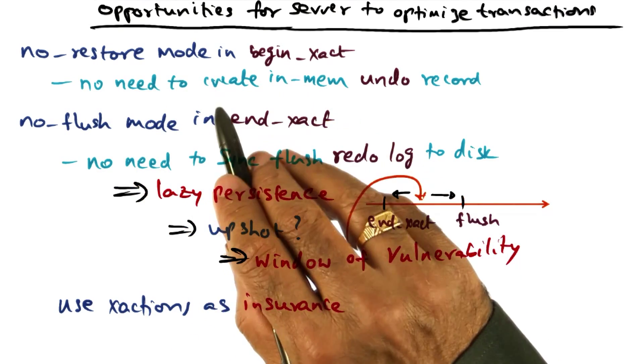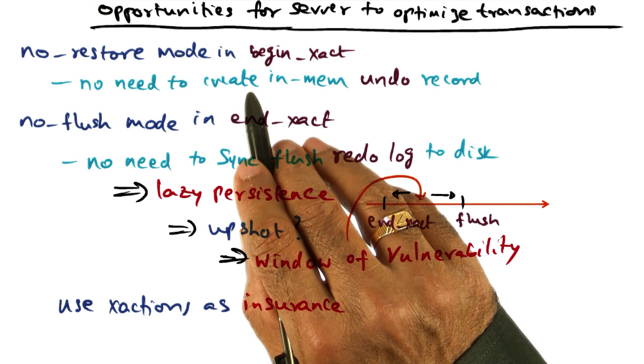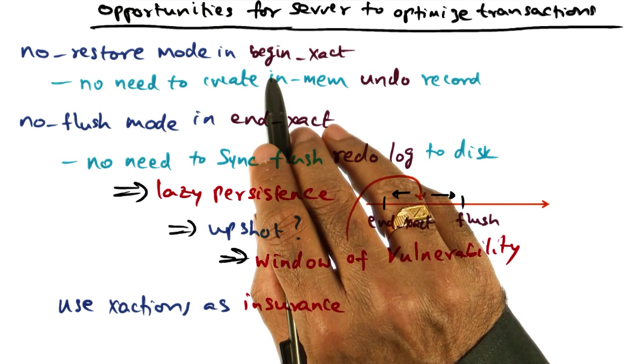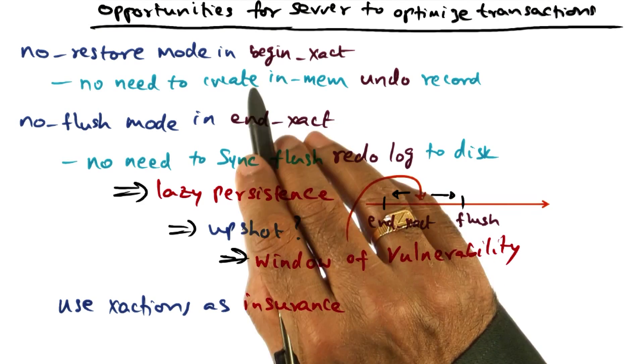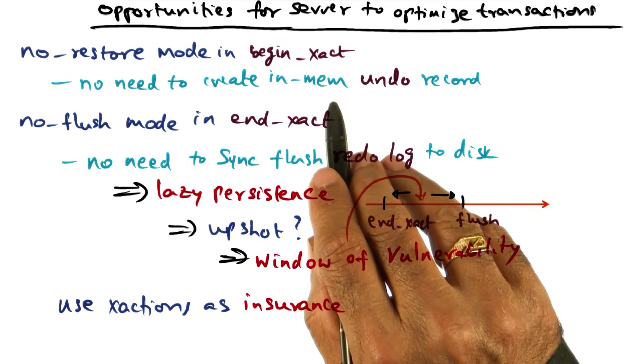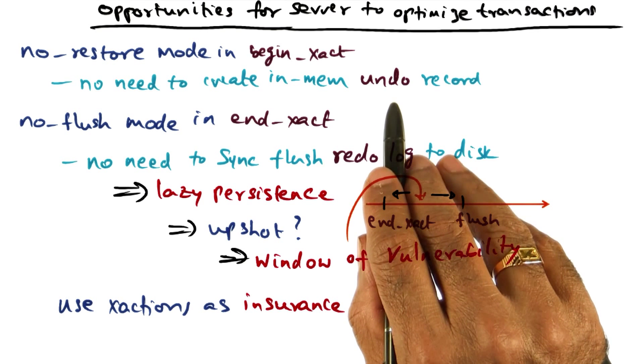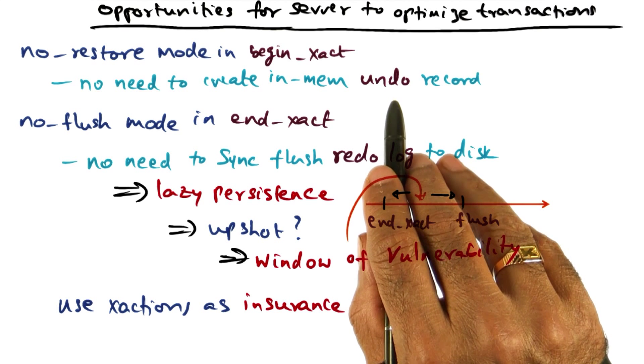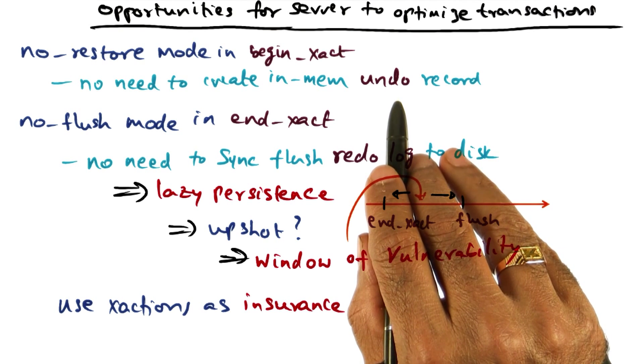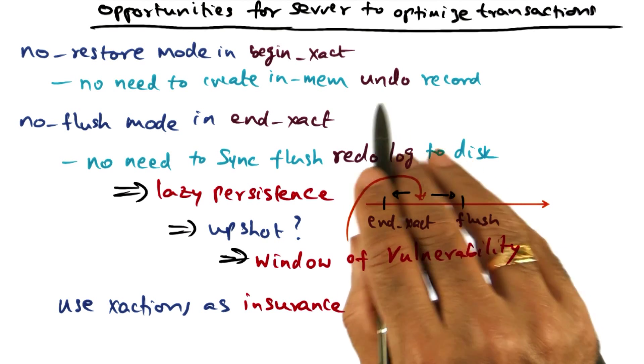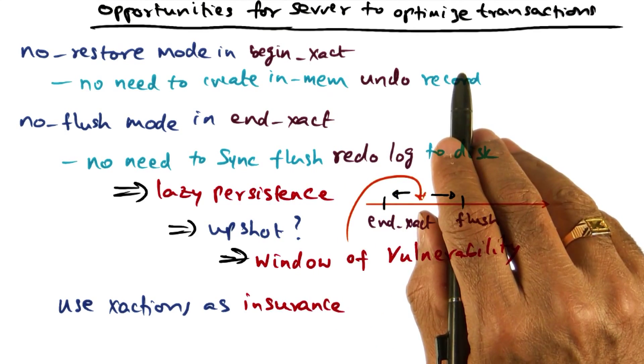The no restore mode in begin transaction is signaling to RVM that this transaction that I'm starting is not going to abort. And therefore, there is no need for you to create an in-memory undo record for me. Even though I'm going to give you a set range call, don't bother creating an undo record for the range of addresses that I intend to modify in this begin transaction.